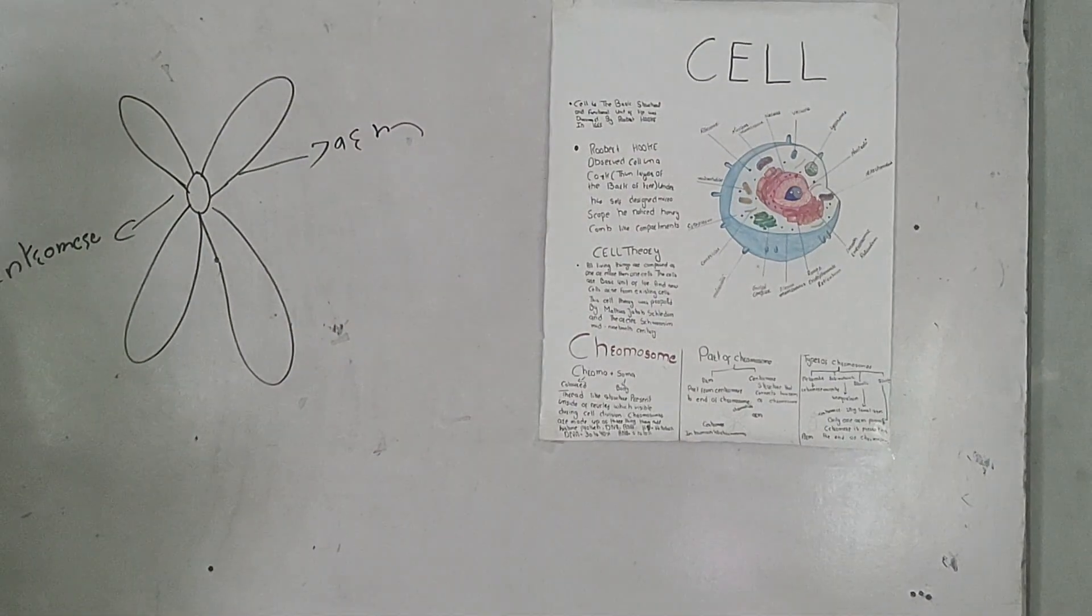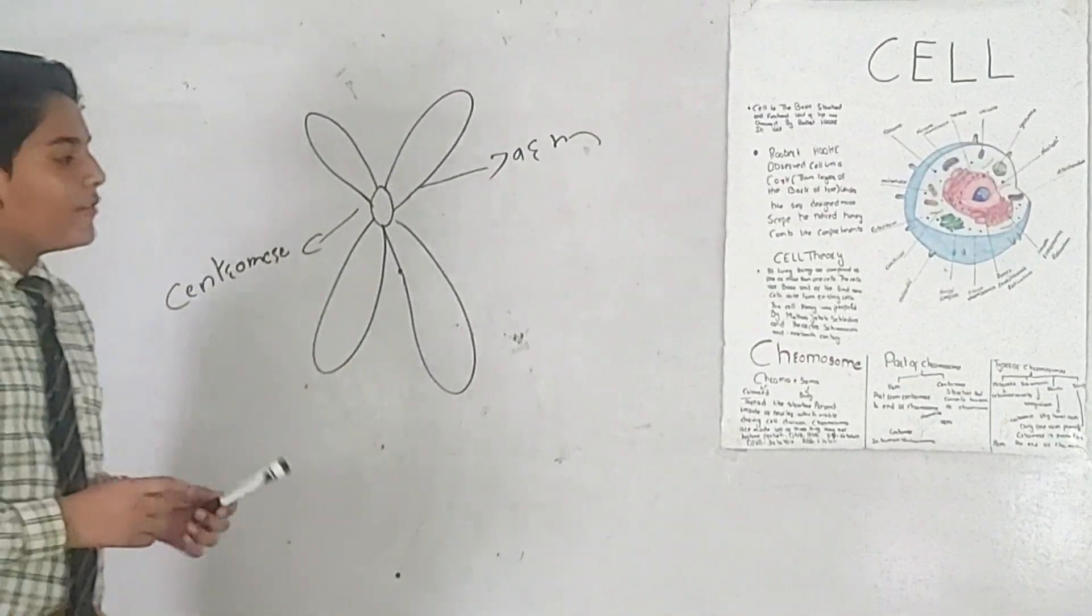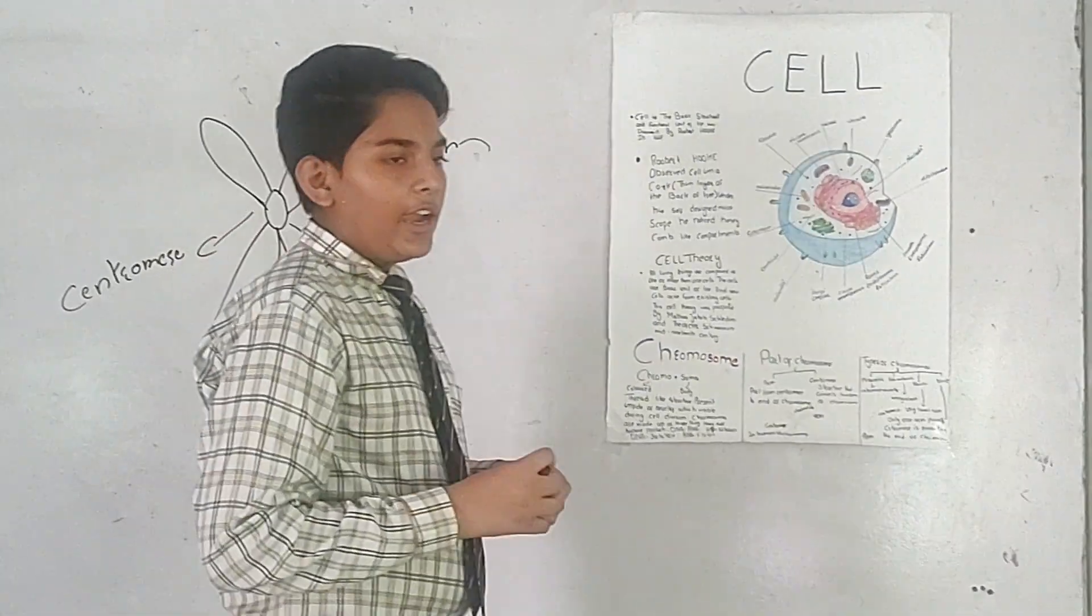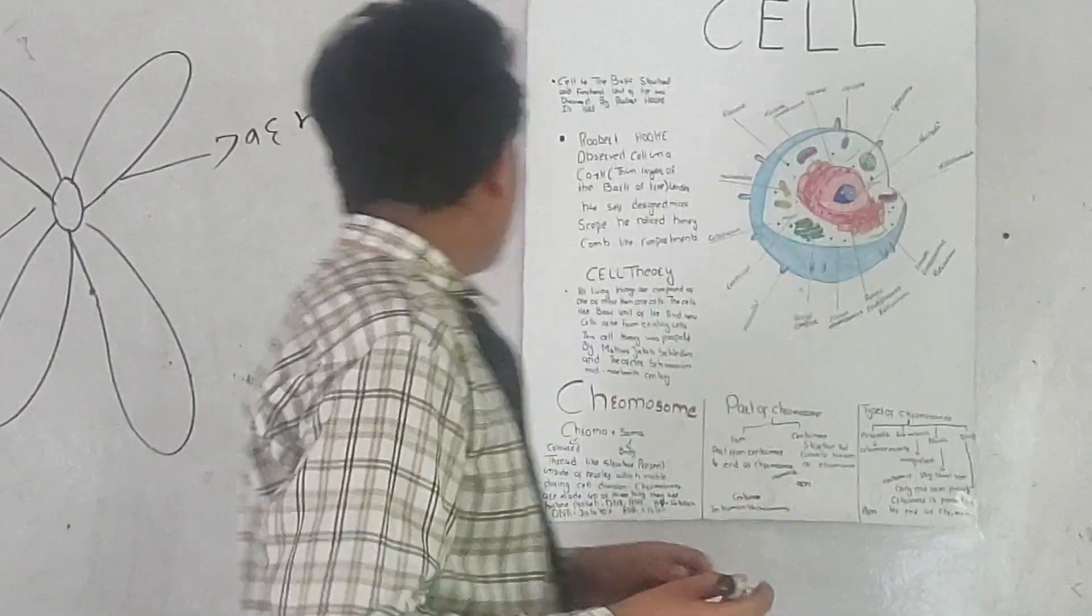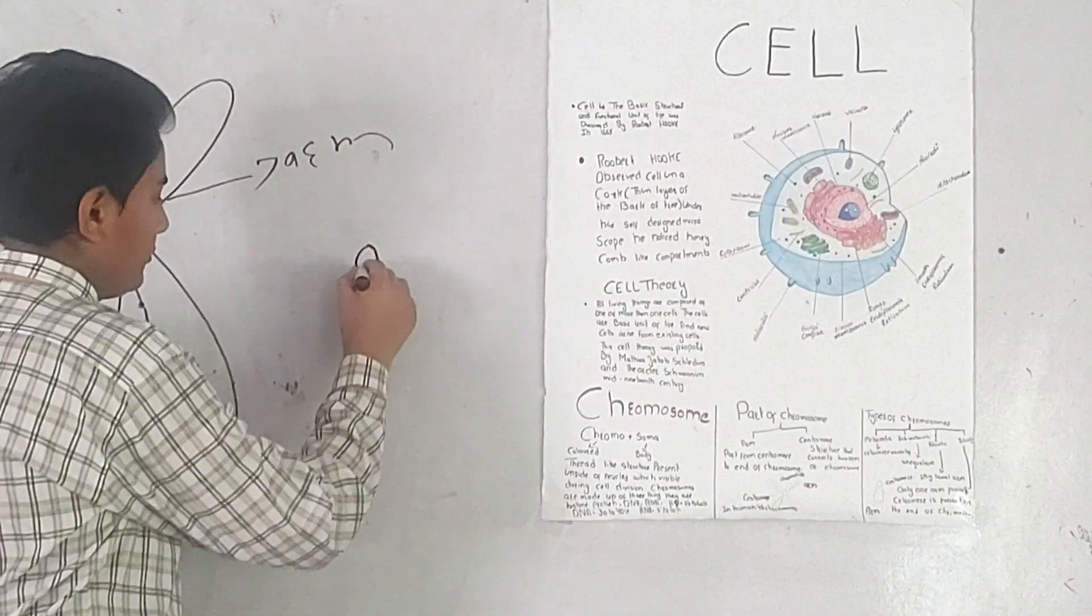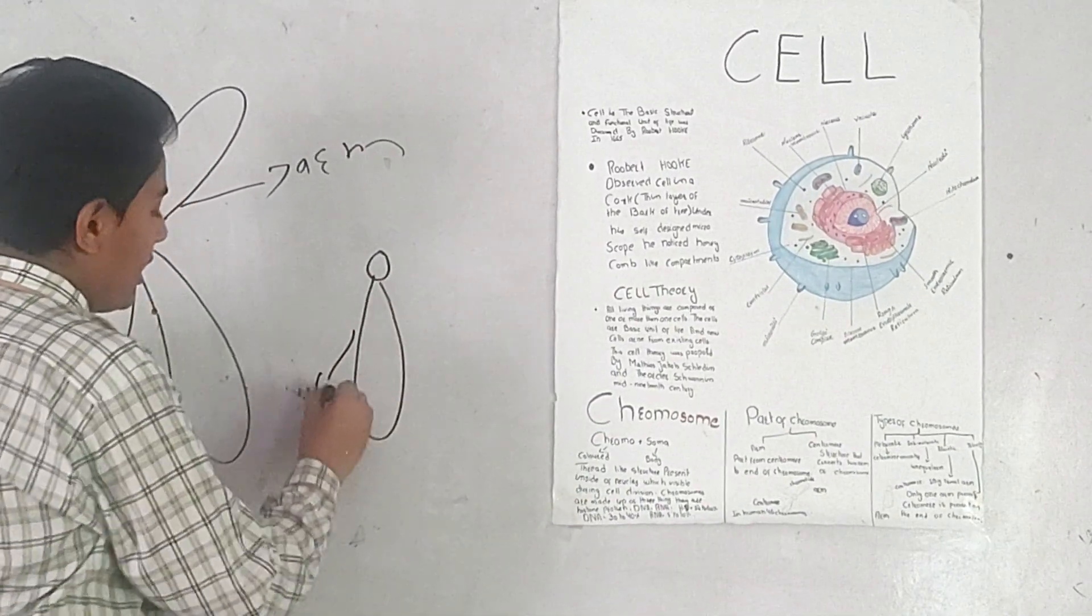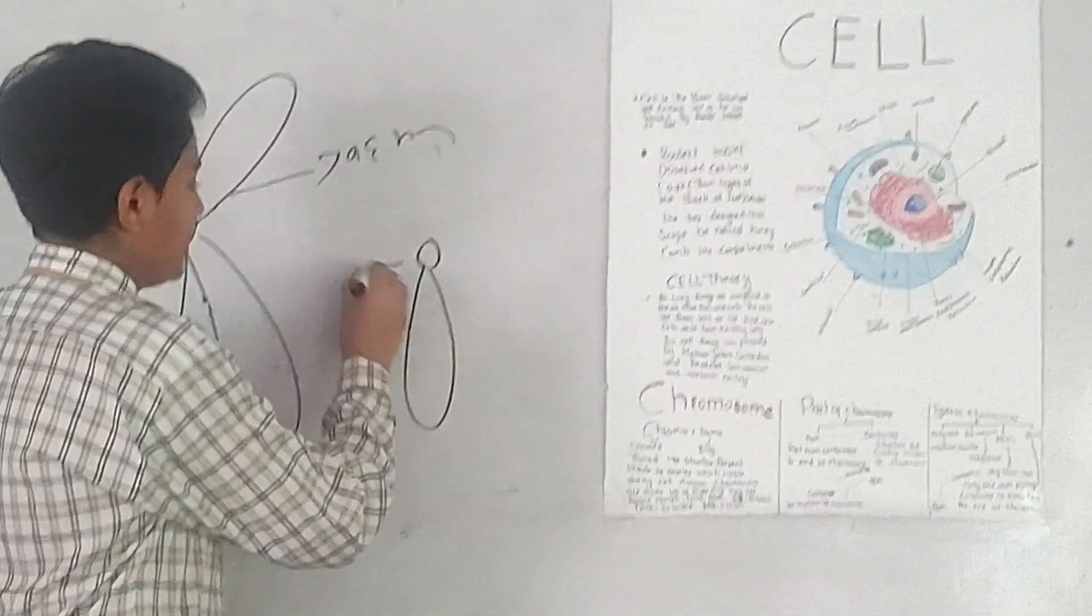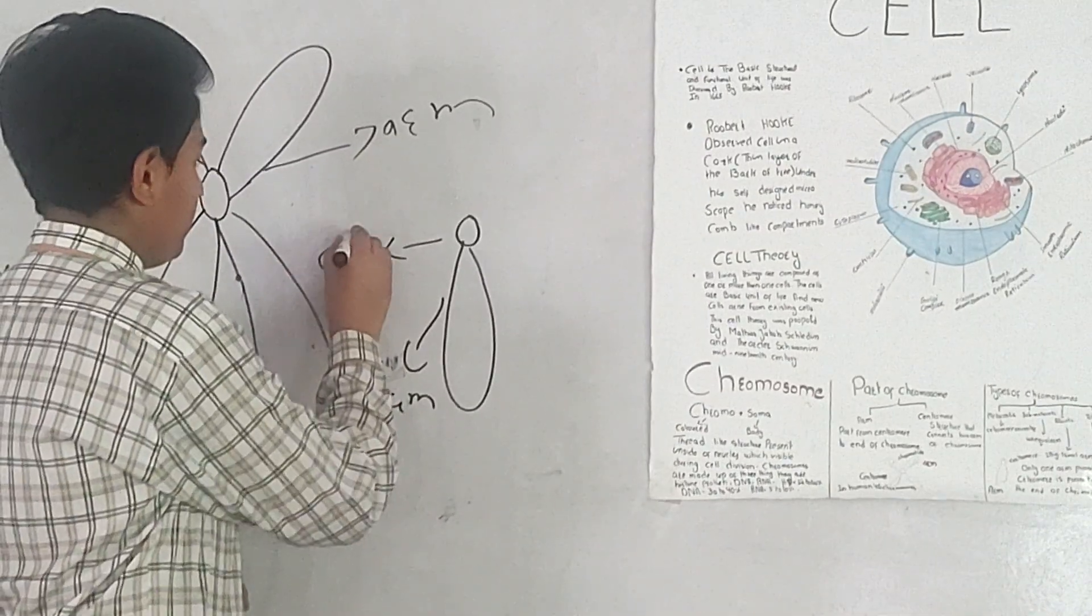Telocentric is a type of chromosome in which only one arm is present and centromere is at the end of chromosome. Like that. This is arm and that is centromere.